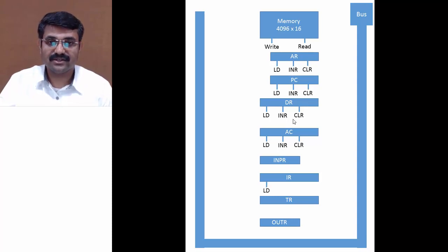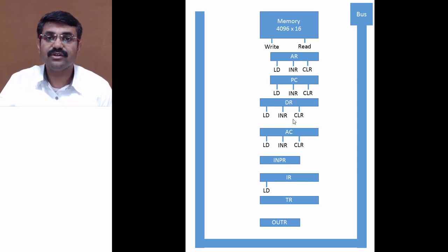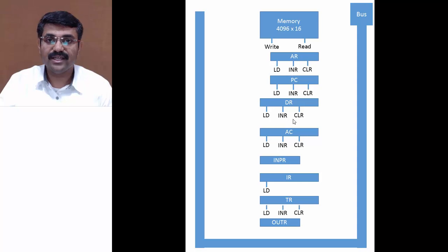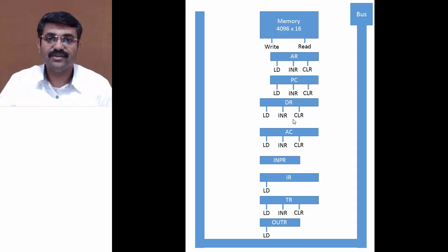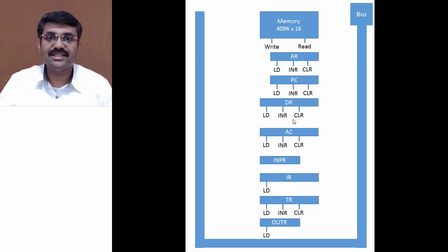The IR register has only one signal — load — because IR does not require any kind of increment or clear operation. TR will again have all three signals. OUTR will have one signal — load — because it will load the data from the accumulator when transferring data to the output device.